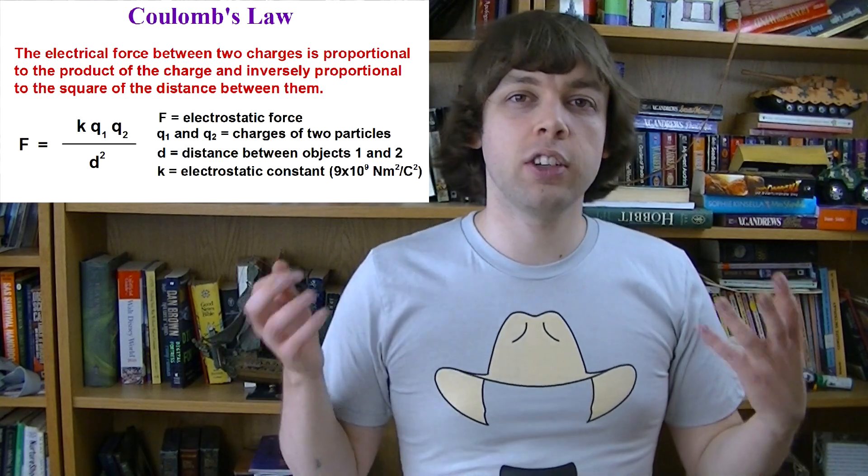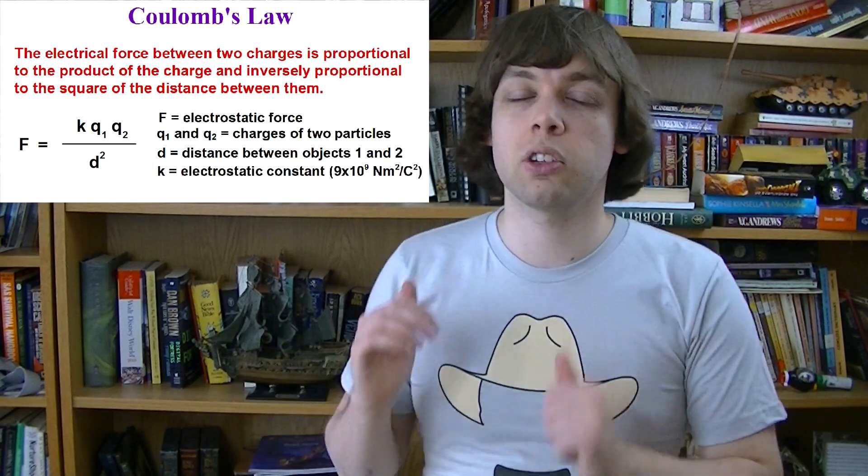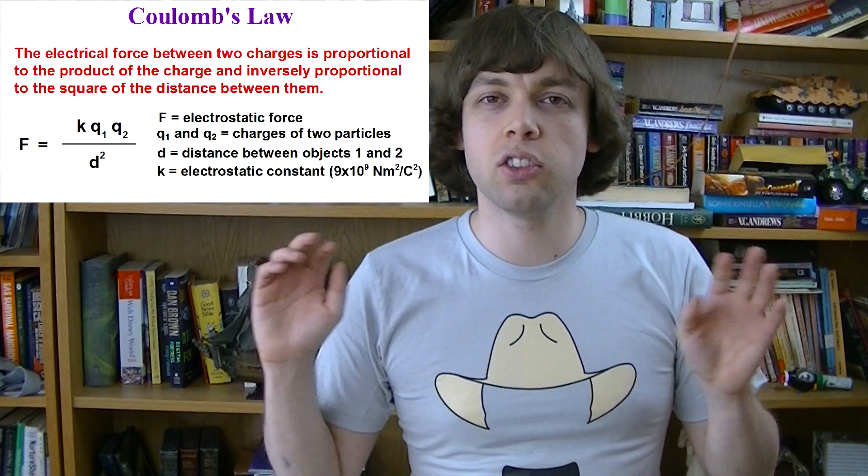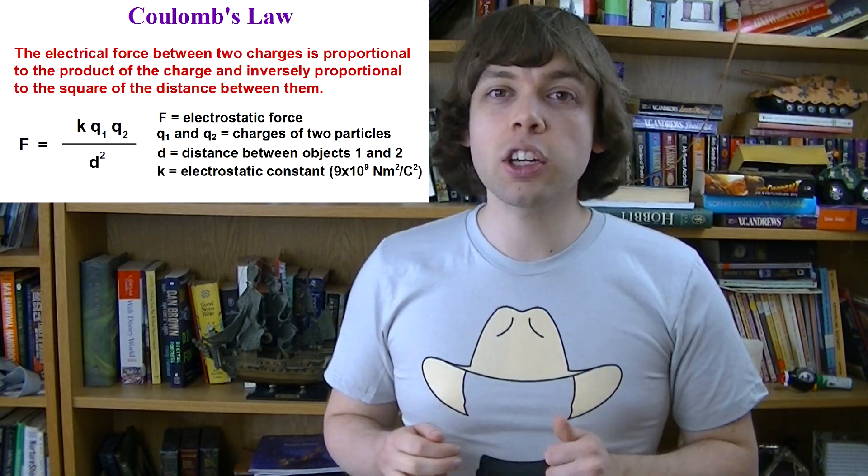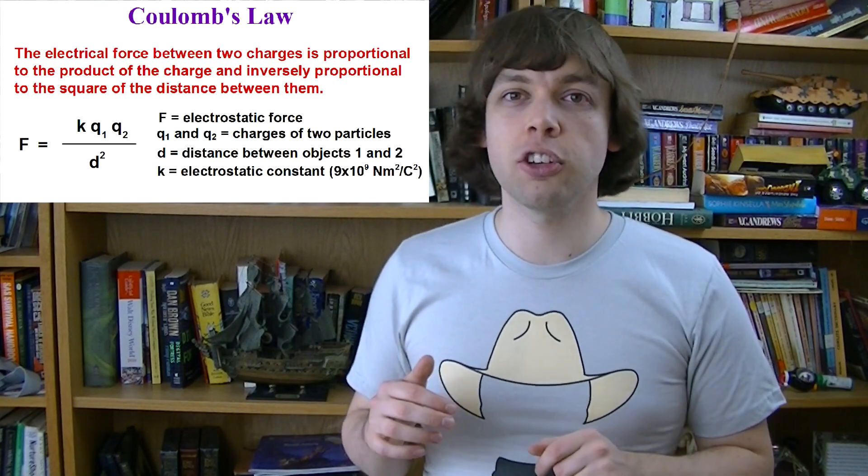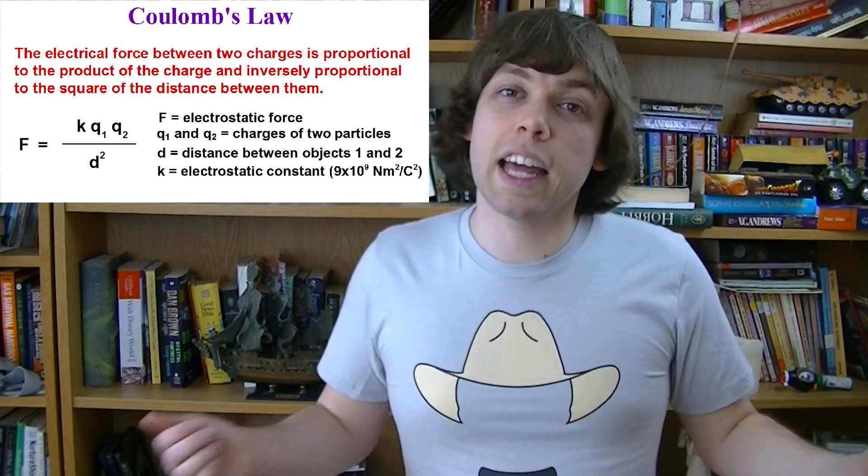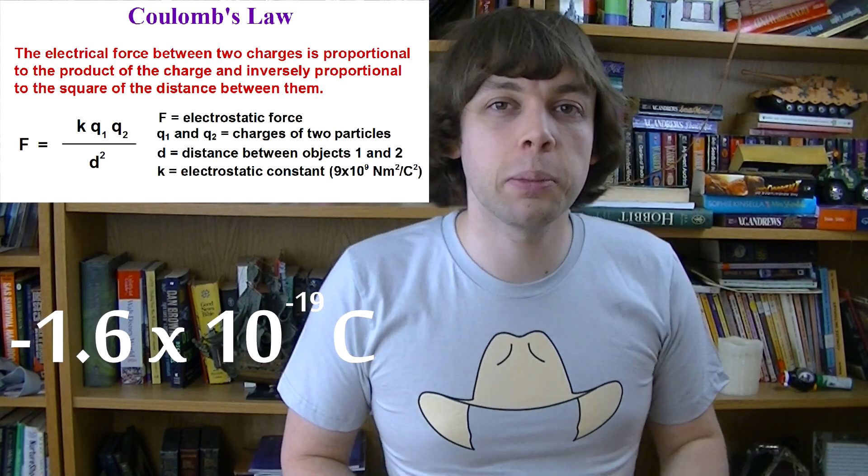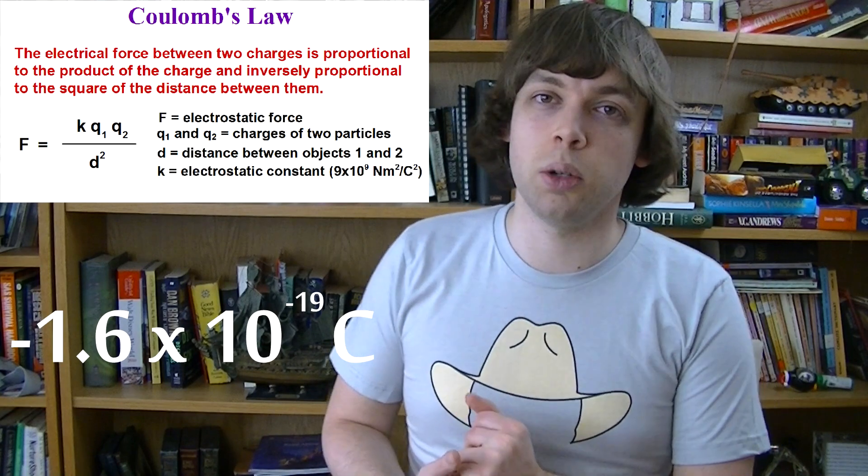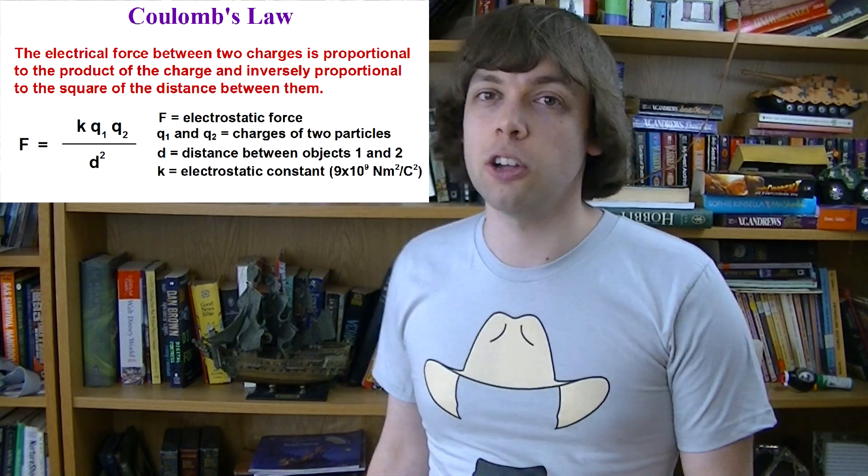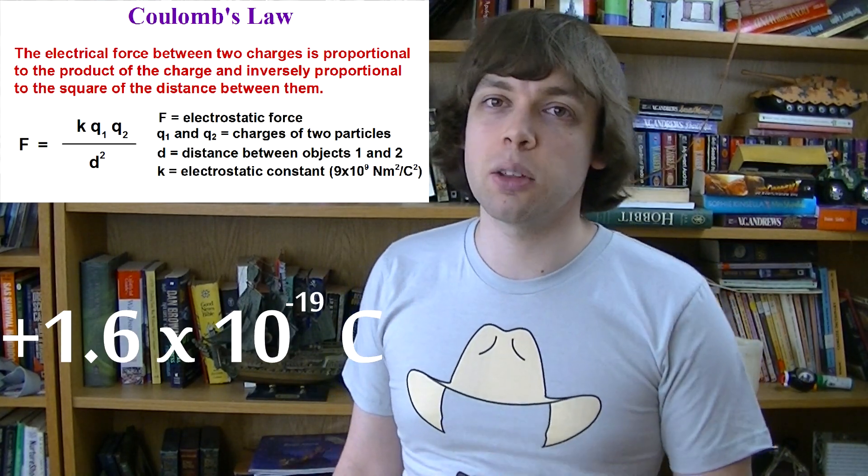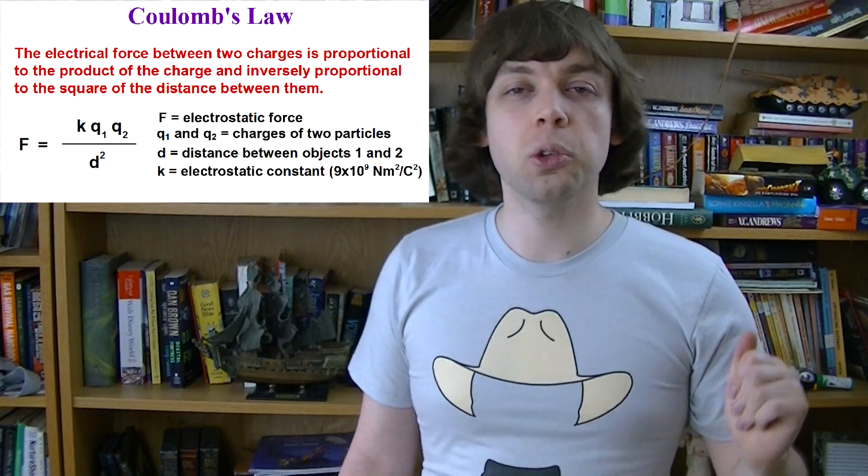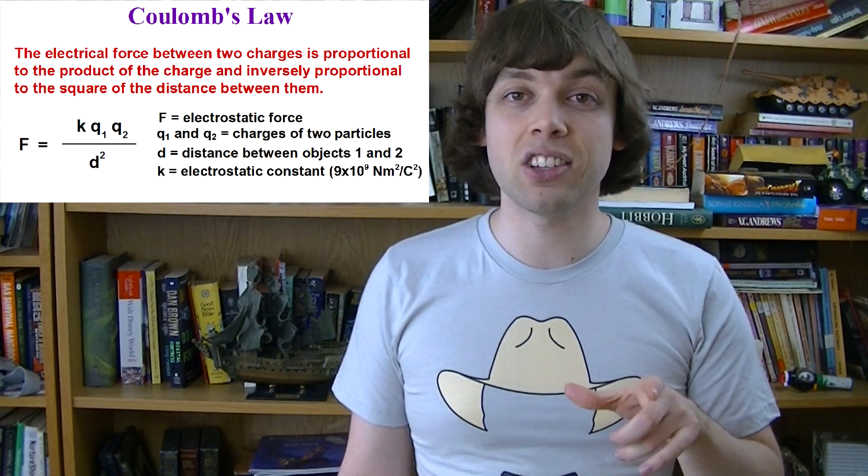In this equation, F is the force between the two charges. K is Coulomb's constant, or the electrostatic constant. It's just a number, 9 times 10 to the 9. Q1 and Q2 are the sizes of the two charges, measured in Coulombs. For example, an electron has a charge of 1.6 times 10 to the negative 19 Coulombs, and a proton has the opposite charge, positive 1.6 times 10 to the minus 19 Coulombs. Last of all, D is the distance between the charges, measured in meters.